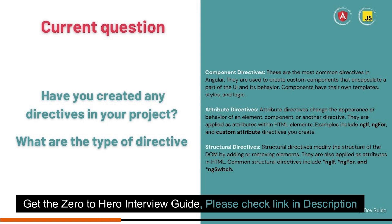The second type is a structural directive — ng-for, ng-switch are mostly used there. And the third type is an attribute directive — ng-class and ng-style. Correct.